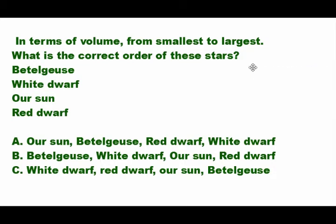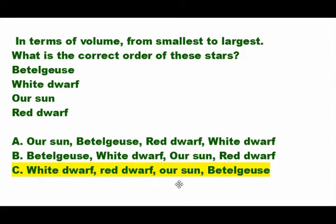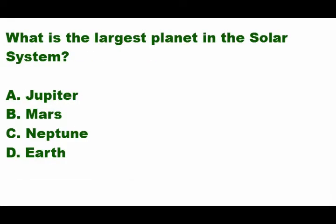The answer is letter C. The smallest is the white dwarf, the next is red dwarf, then our Sun, and the biggest is Betelgeuse. All right, let's go to the next question.